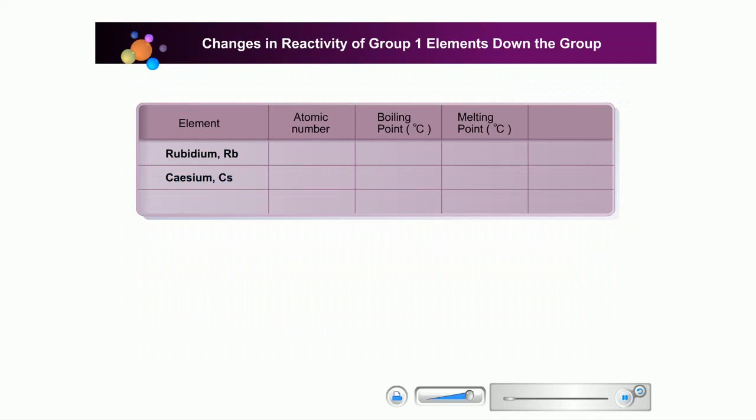Rubidium, cesium, and francium are the three other elements in group 1. The atomic size and mass density increase from rubidium to cesium to francium because of the arrangement of electrons.